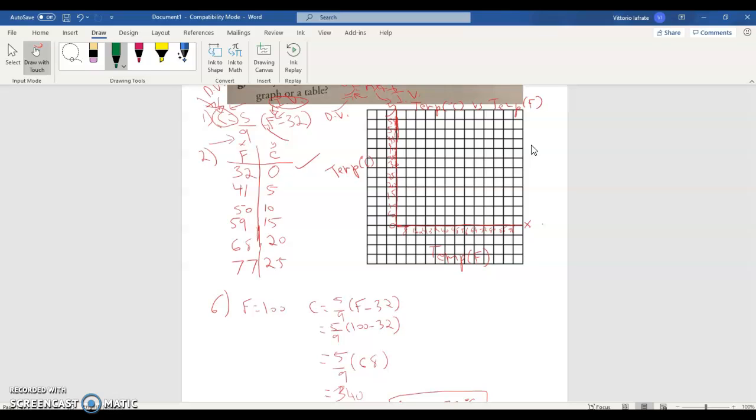So again, I put my temperature in Celsius on the y-axis, temperature in Fahrenheit on the x-axis, because you have independent on x, dependent on y. Then you have your title, temperature versus temperature, so you could see Celsius versus Fahrenheit, or temperature in degrees Celsius versus temperature in Fahrenheit.